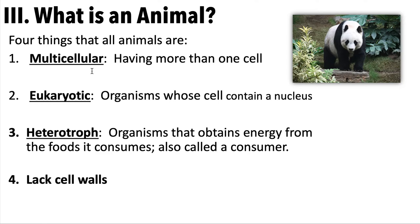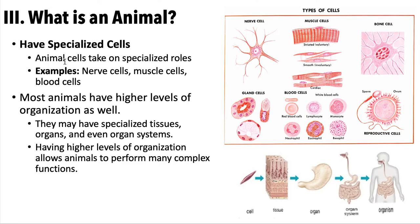So those four things — multicellular, eukaryotic, heterotroph, and lacking cell walls — determine at a very basic level if something is an animal. Breaking this down further: animal cells in general are eukaryotic and don't have cell walls. But back in biology freshman year, you learned the organelles of the cell and got a basic general diagram.